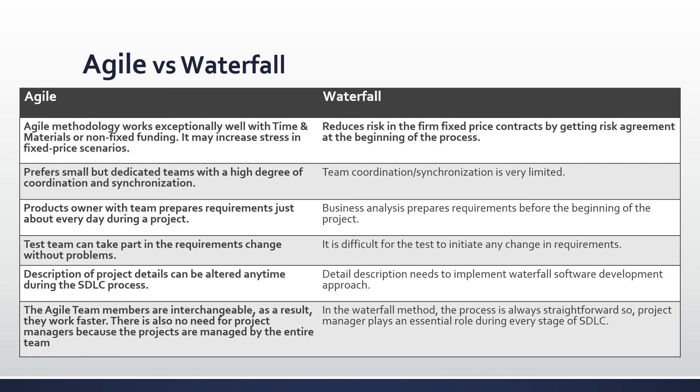In agile it prefers small, dedicated teams with a high degree of coordination; in waterfall the team coordination and synchronization is very limited. In agile, product owners and teams prepare requirements just about every day; in waterfall requirements are done at the beginning of the project. In agile, test teams can take part in requirements changes without a problem; in waterfall it's difficult to initiate any changes to requirements. In agile the team members are interchangeable and as a result they work faster; in waterfall the process is straightforward and the project manager plays an essential role during each stage of the software development lifecycle.